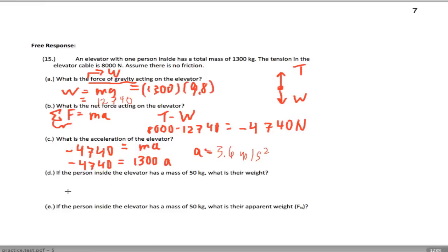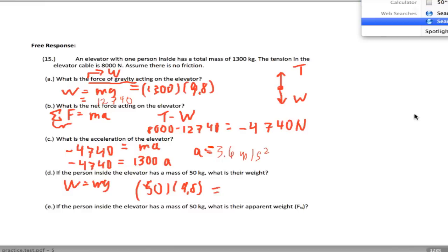Now, if the person in the elevator has a mass of 50 kilograms, what is their weight? Weight is mg, so we have 50. I need to be careful here - the acceleration is negative, meaning the acceleration acts in the same direction as gravity. So 50 times 9.8 gives us the weight, which is 490 newtons.